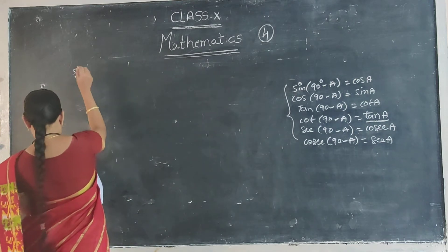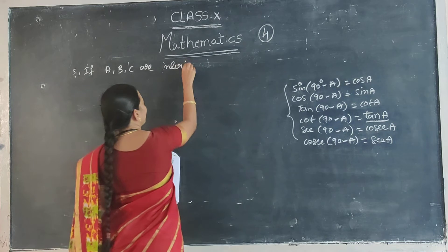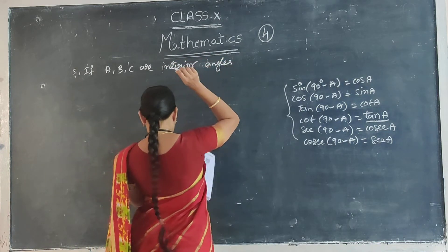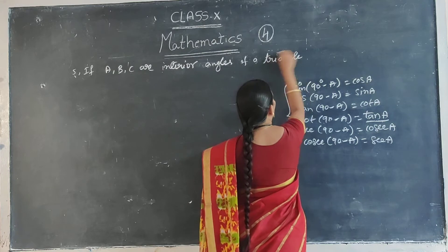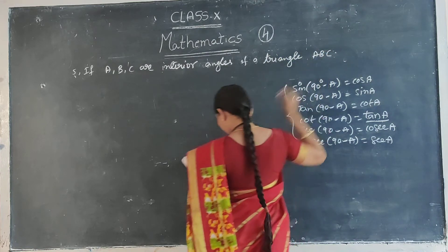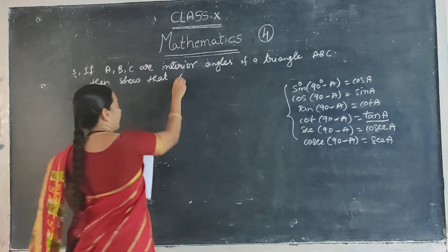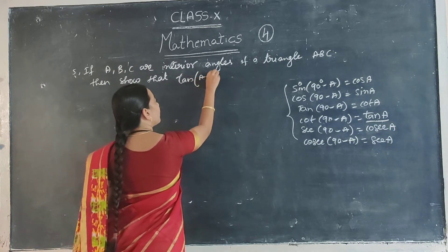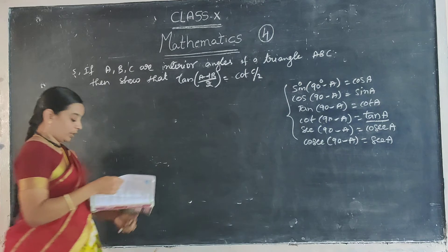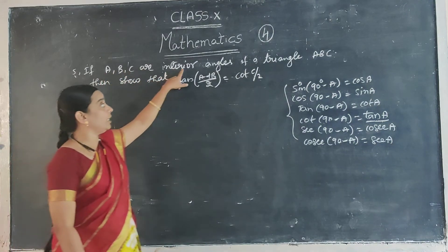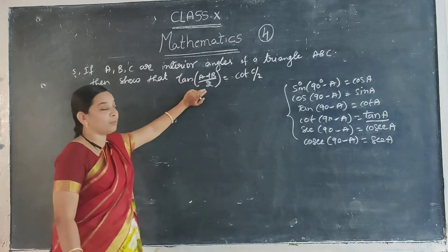Next is question number 5. If A, B, C are interior angles of triangle ABC, then show that tan of (A plus B) by 2 is equal to cot C by 2.